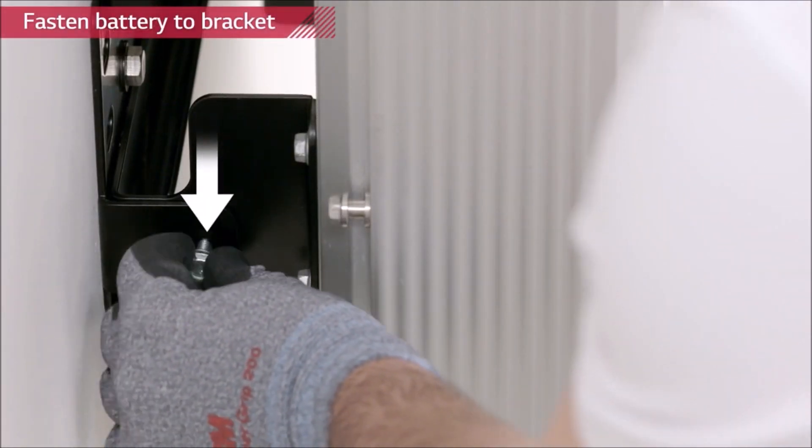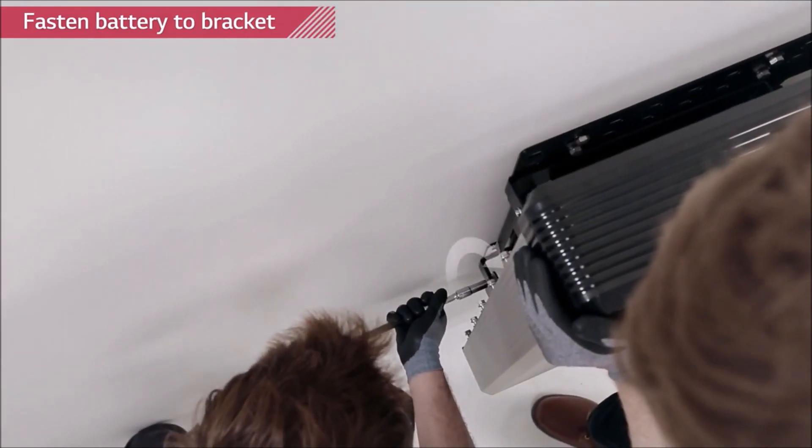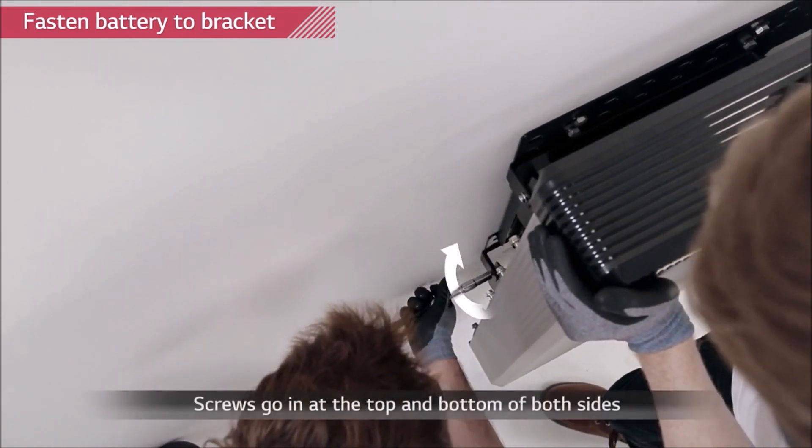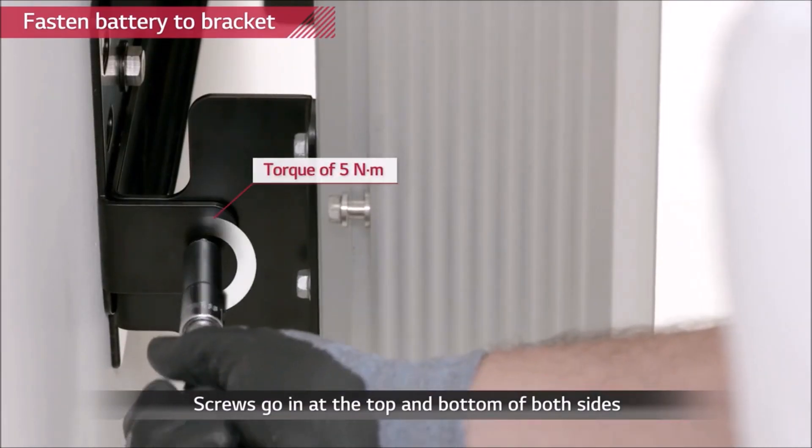Remove the lifting handles and tighten the two hex socket screws located at the back of left side of the battery pack with a torque of 5 Newton meters.